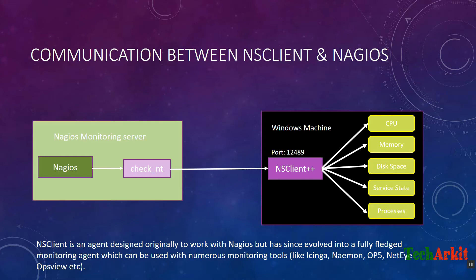NSClient is an agent designed originally to work with Nagios, but has since evolved into a fully fledged monitoring agent which can be used with numerous monitoring tools like Opsview, Op5, NetIQ, and Opsview. There are many other tools which NSClient supports. This is exactly the communication between NSClient and Nagios.